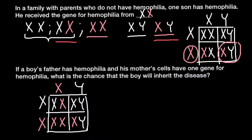Even if the father is affected, this does not increase the chances that his sons will be affected, because sons can only receive a Y chromosome from the father and an X chromosome from the mother. When the mother is heterozygous, as in the previous example, the chance for boys to inherit this genetic disorder is the same — 50%. So 50% of the male progeny would be affected, and the answer is 50%.